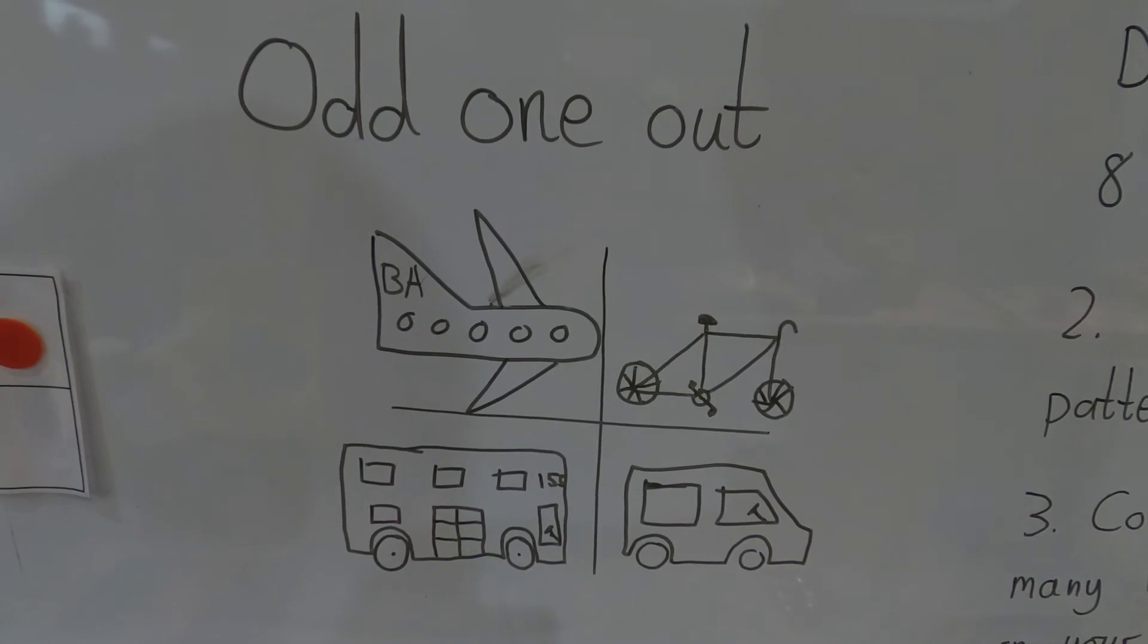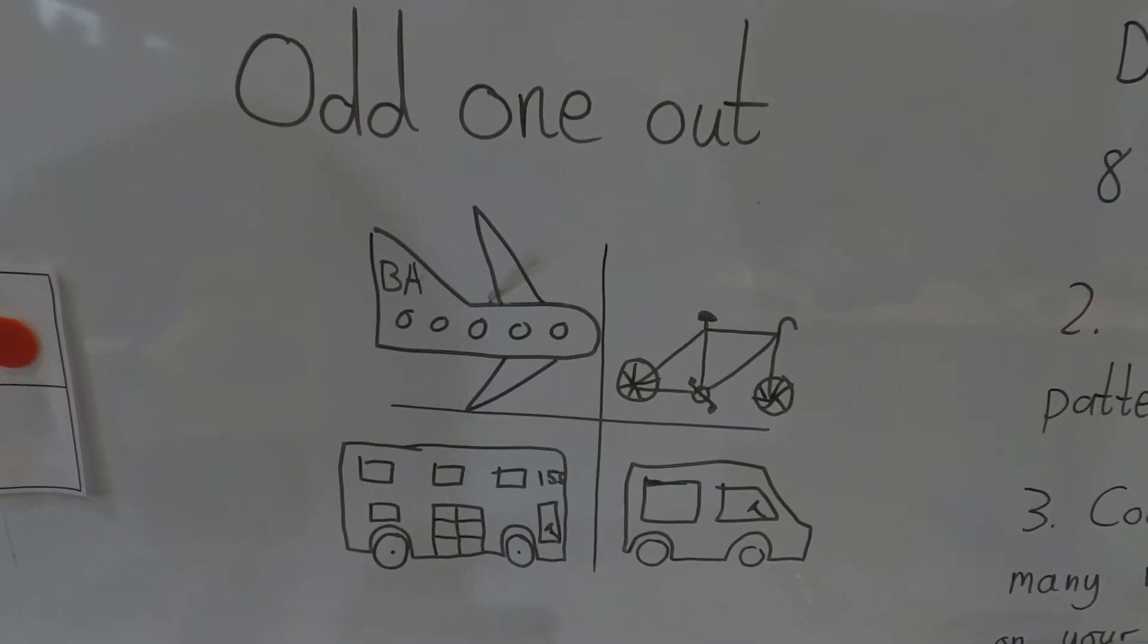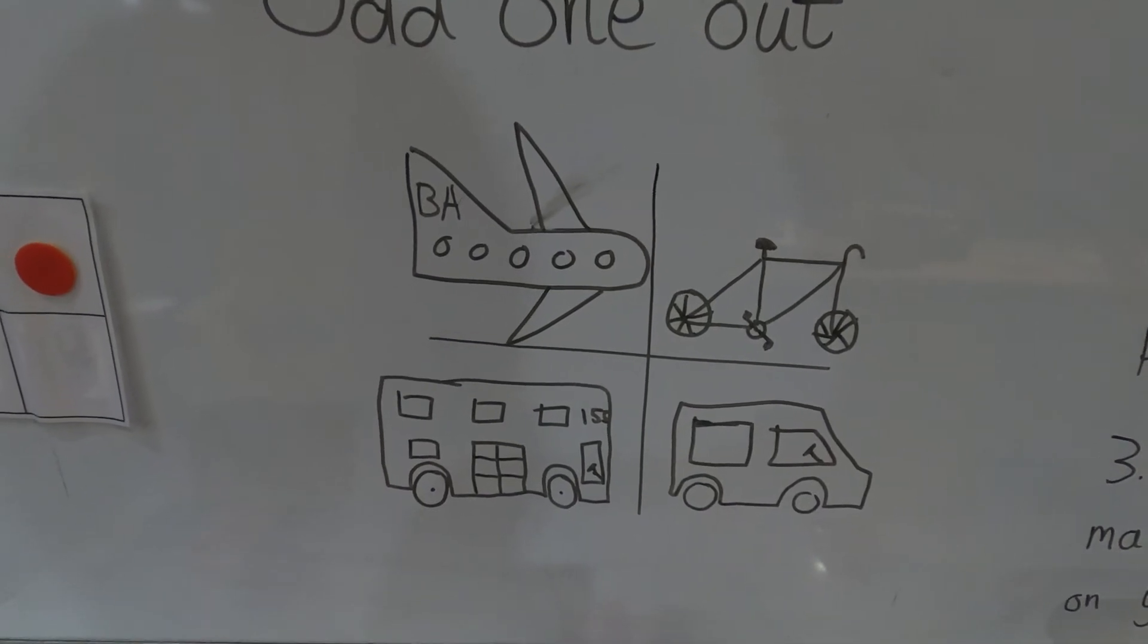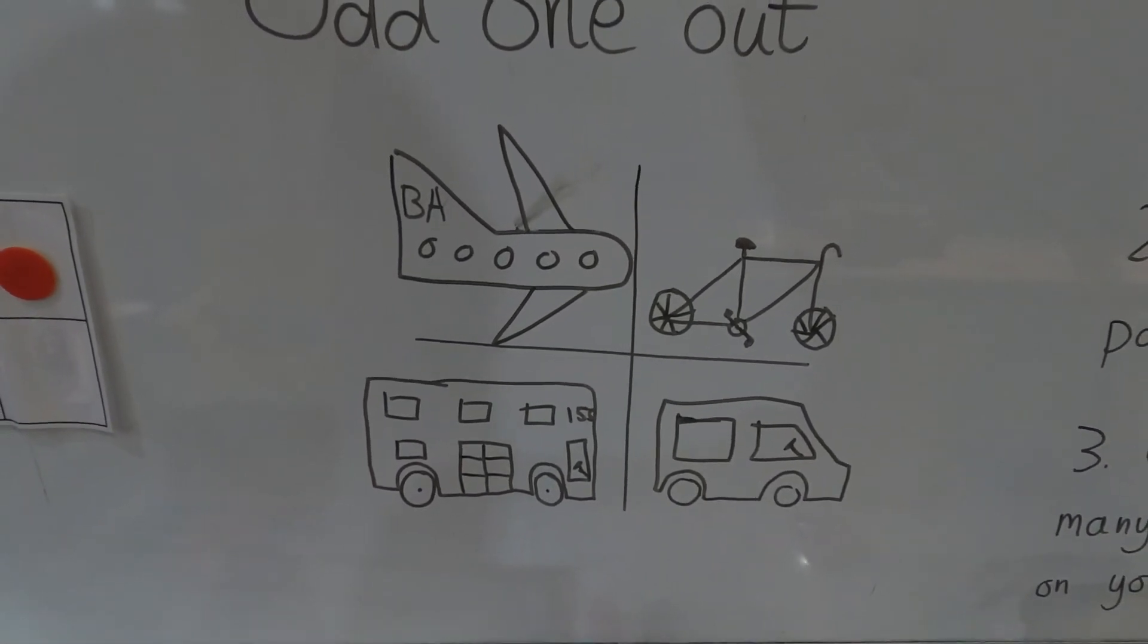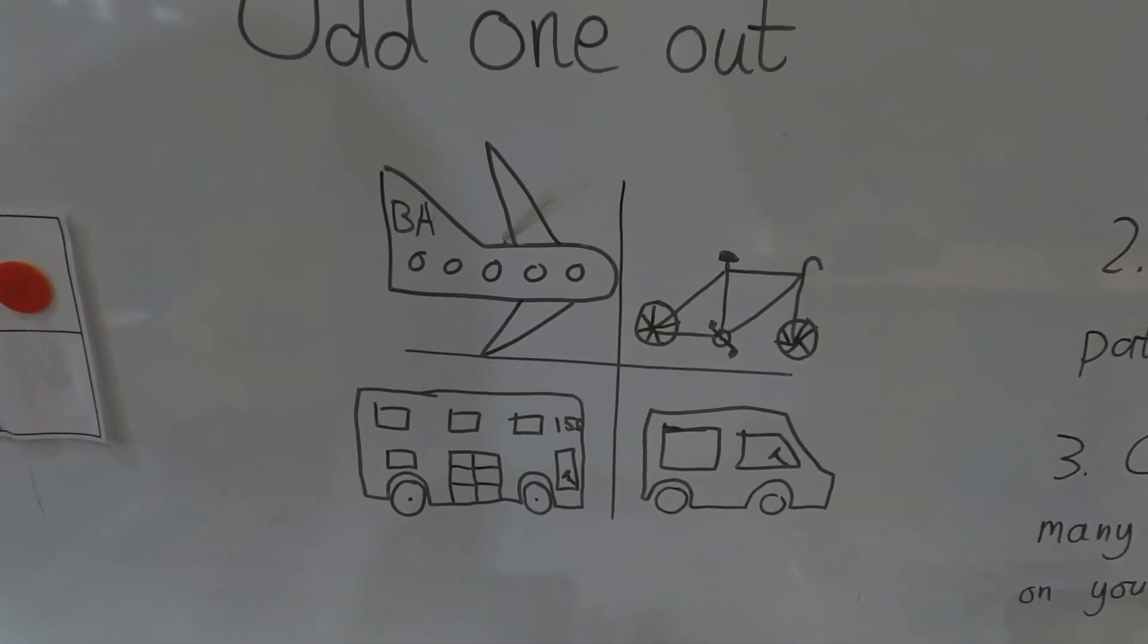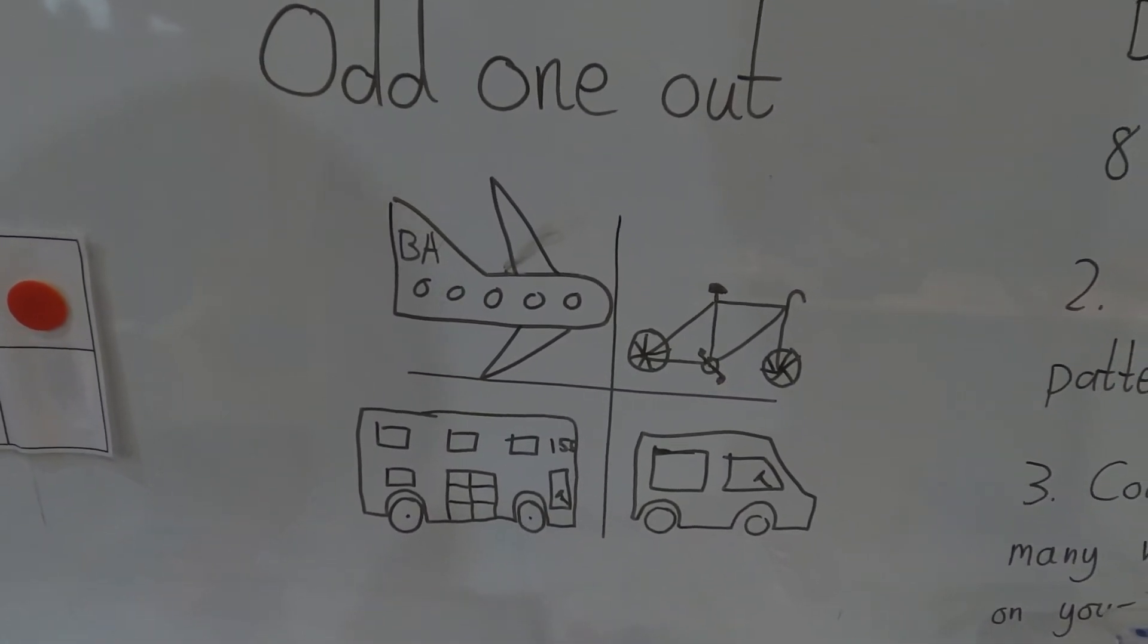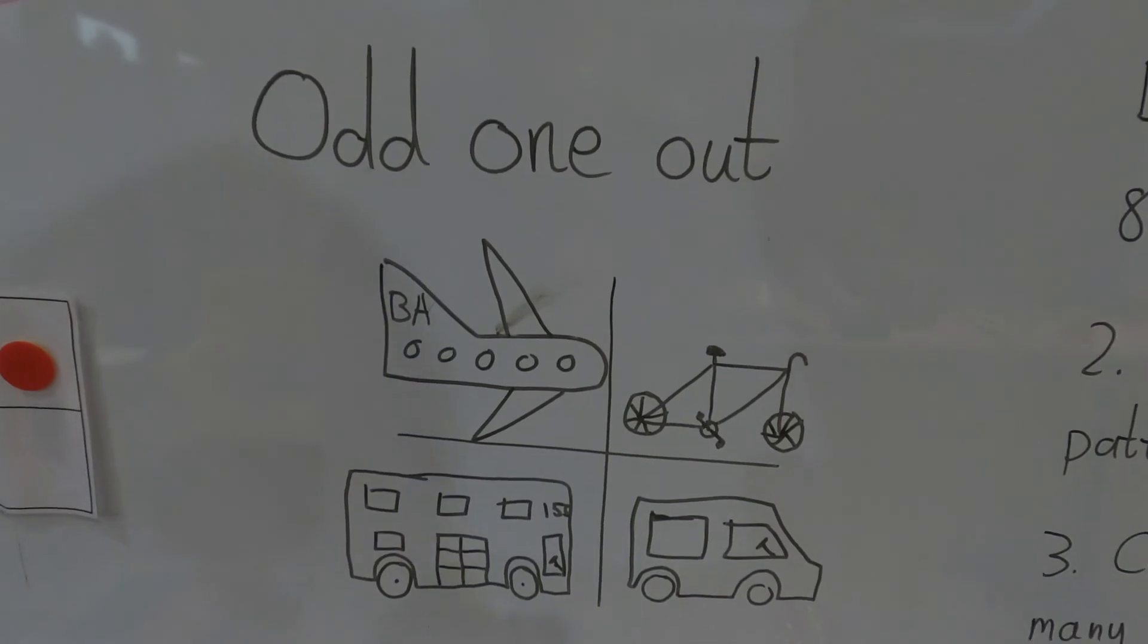There we go, that's my two odd one out. The bike is the odd one out because it's the only one you have to pedal, or the bus is the odd one out because it's the only one with a number at the front. Those are my answers. Now you have to think of some answers of your own. What did you come up with? Let me know what your answers were. Have you got something different? Have you used a nice long sentence, please?